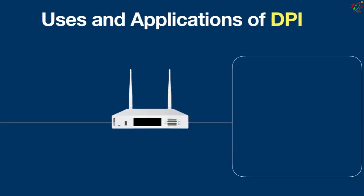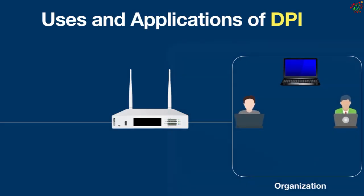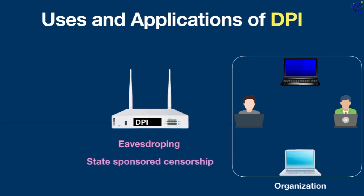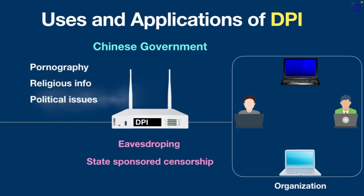Deep packet inspection has many uses and applications. If your organization has users using laptops for work, DPI is vital in preventing worms, spyware, viruses, and other forms of malicious traffic from entering your corporate network. It can also be used for more nefarious activities like eavesdropping and state-sponsored censorship. In fact, the Chinese government has been known to use deep packet inspection to monitor network traffic and censor content and websites, including pornography, religious information, political materials, and even popular websites such as Wikipedia, Google, and Facebook.